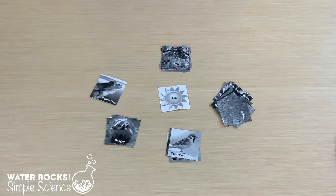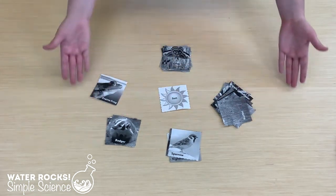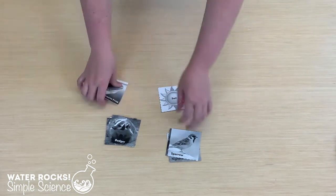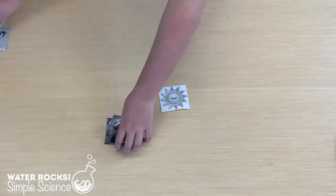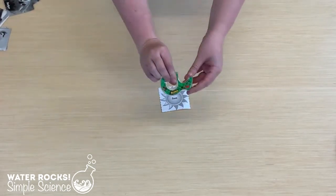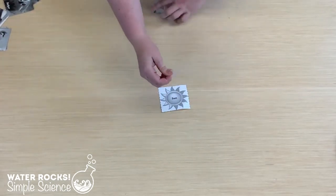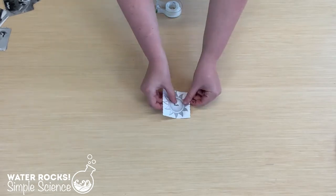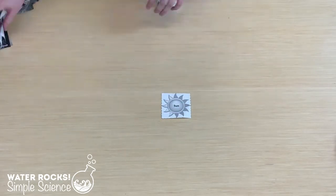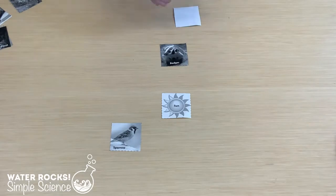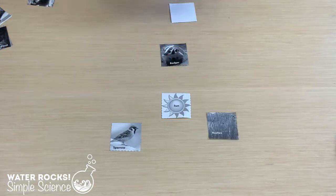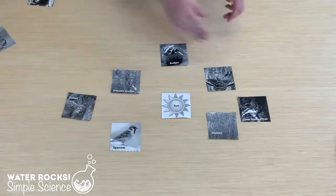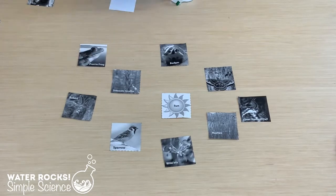Let's see how this works. First, we need to cut out all the pictures of prairie plants and animals. I've already done this step for time's sake, so we can move on to the next step. Next, we'll tape the picture of the sun down onto the table and make certain it's in the middle. Then let's tape the different plants and animals in a circle around the sun. As you can see, we have a variety of herbivores, carnivores, and omnivores.